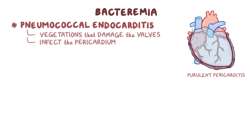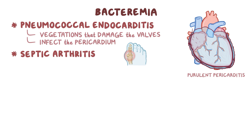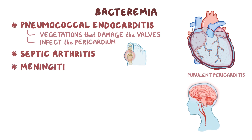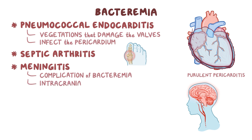Strep pneumoniae can also spread to a joint, resulting in septic arthritis, or it can cross the blood-brain barrier and cause meningitis as a complication of bacteremia, rather than invading directly as part of a primary disease. Once it crosses the blood-brain barrier, it can also cause an intracranial or spinal epidural abscess.